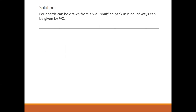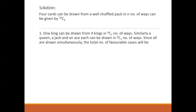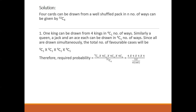Let us see the solution. Four cards can be drawn from a well-shuffled pack in n number of ways, given by 52C4. Now the formula for combination is n factorial divided by r factorial into bracket (n minus r) factorial. Please remember and use this formula while doing the calculation. One king can be drawn as 4C1, and similarly for the other three cards as well. Writing the formula, we can write 4C1 into 4C1, four times, divided by 52C4.